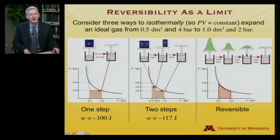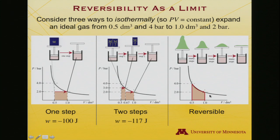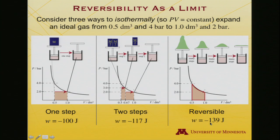The reversible path imagines not a weight but a pile of sand — taking it off one grain at a time. It's a slow experiment, but reversible: with each infinitesimal grain relieving pressure, the gas expands a tiny bit, doing work and raising the piston. Integrating under that curve using the logarithmic solution gives minus 139 joules — illustrating that work depends on the path, specifically on how you change the external pressure.